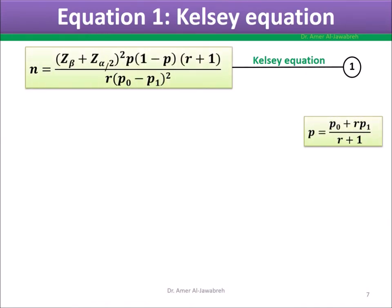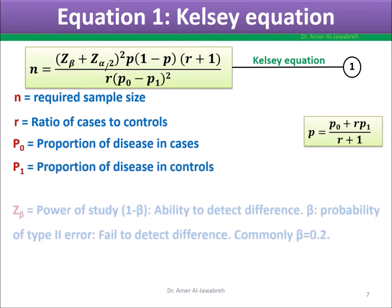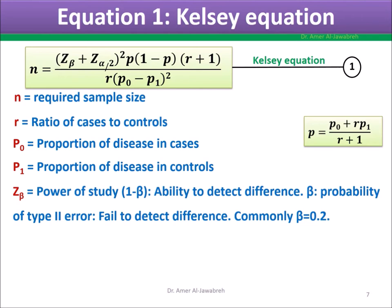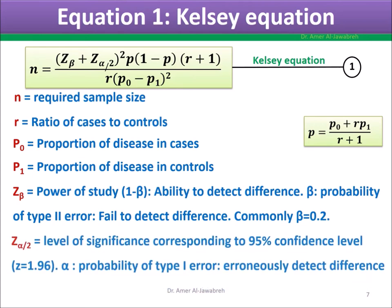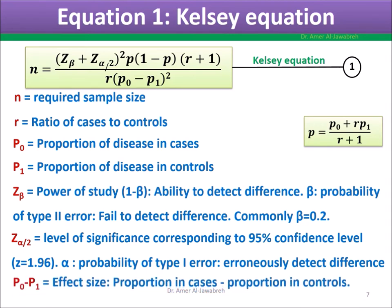Equation 1 is the Kelsey equation, with 5 variables: R (ratio of cases to controls), P0 (prevalence or proportion of disease in cases), P1 (prevalence or proportion of disease in controls), Zeta Beta (part of study power, 1 minus Beta — the ability to detect a difference; Beta is type 2 error, commonly 0.2), and Zeta Alpha over 2 (level of significance corresponding to 95% confidence interval, commonly 1.96). Alpha is type 1 error — erroneously detecting a difference. P0 minus P1 is the effect size.